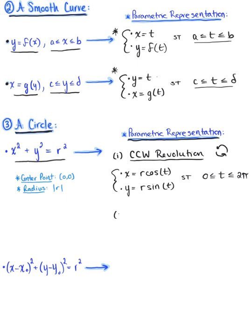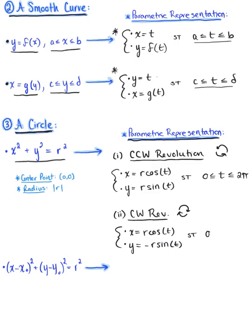Alternatively, for clockwise revolution about the circle, the parametric equations change slightly: x(t) = r·cos(t) and y(t) = −r·sin(t). Again, for a full circle this is such that t is greater than or equal to 0 and less than or equal to 2π. These are the two different parametric representations for a circle centered at the origin with radius r, for both counterclockwise and clockwise orientations.